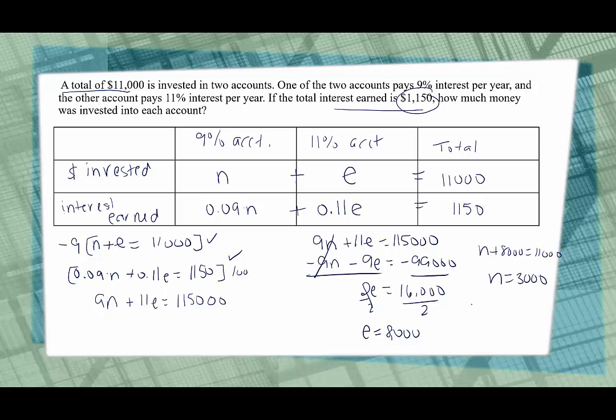So now we know that there is $3,000 invested in the account that pays 9% and $8,000 invested in the account that pays 11%. Not so bad, right?